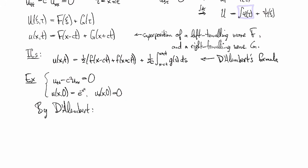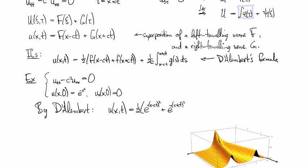So by D'Alembert, we're going to get that u of x, t looks like one-half e to the -(x - ct)² plus e to the -(x + ct)². And that looks like this.